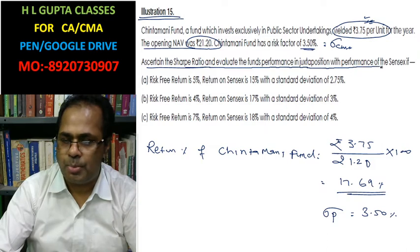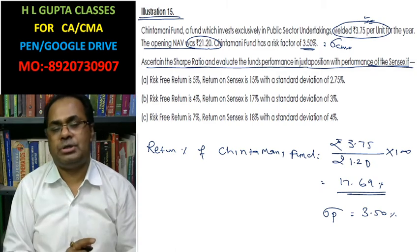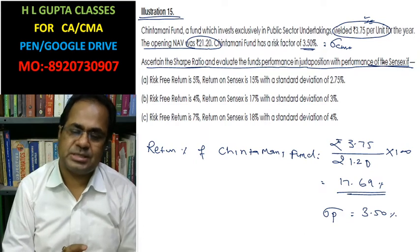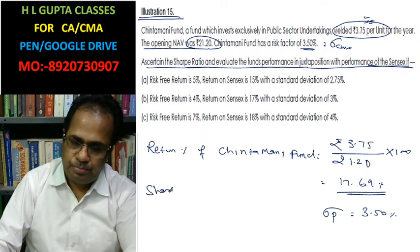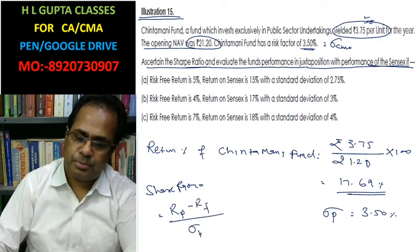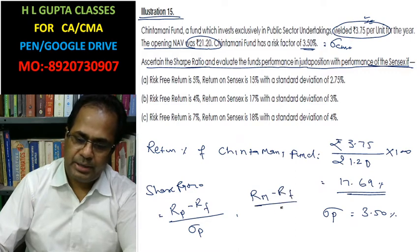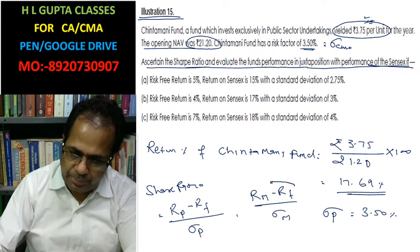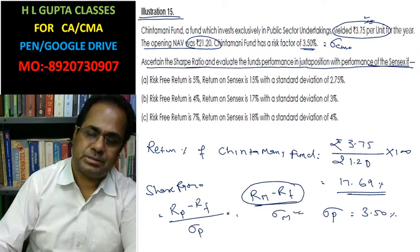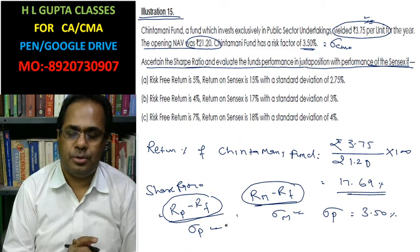We compare the performance by looking at the position of the Sensex. You have to compare the Sharpe ratio of Chintamani Fund with the Sharpe ratio of the market. The Sharpe ratio is calculated as: return of the portfolio minus risk-free rate, divided by the standard deviation of the portfolio. For the market: return of the market minus risk-free rate, divided by the standard deviation of the market. This numerator is the risk premium.